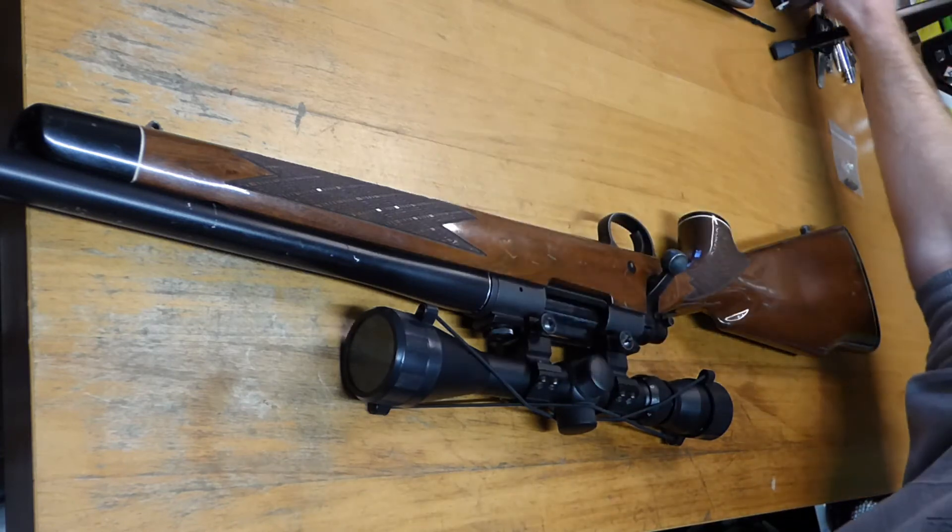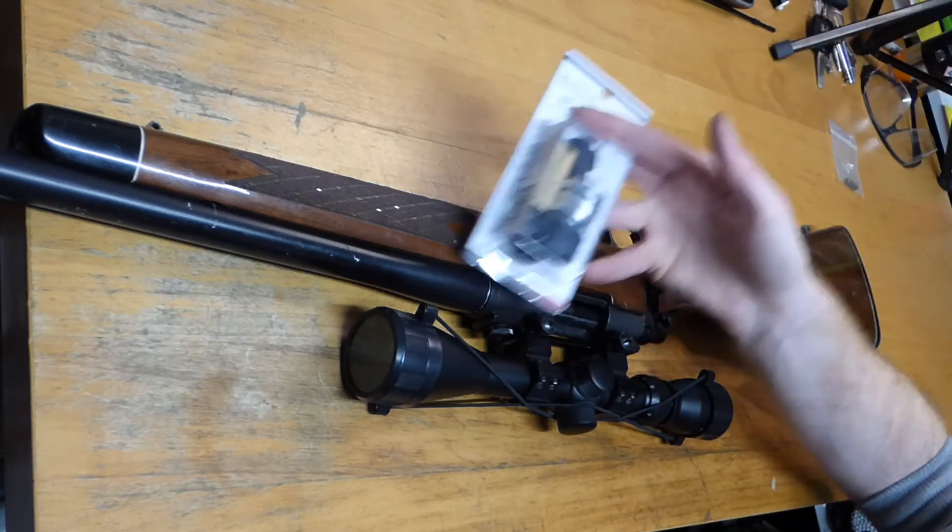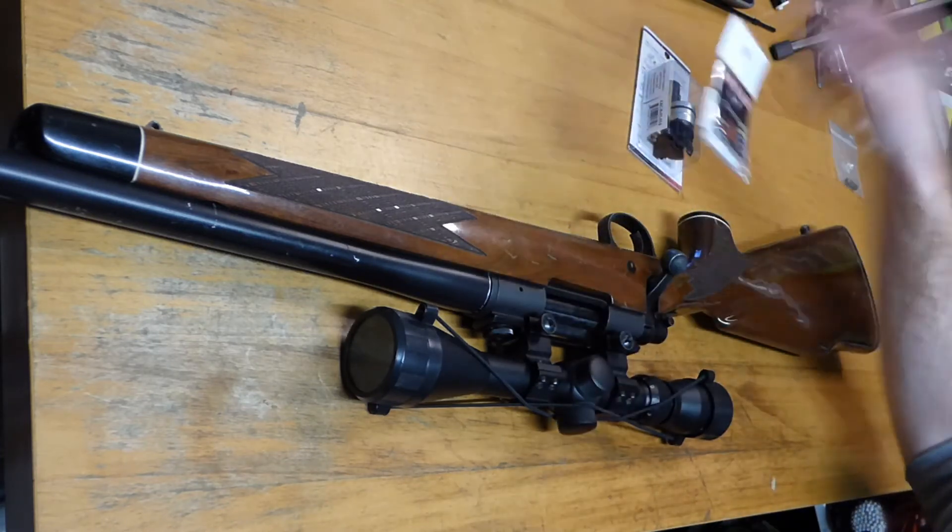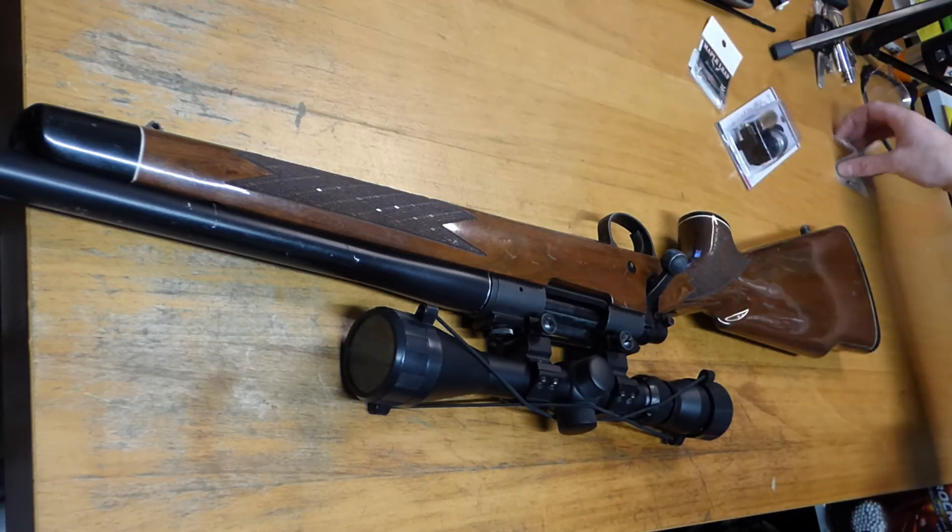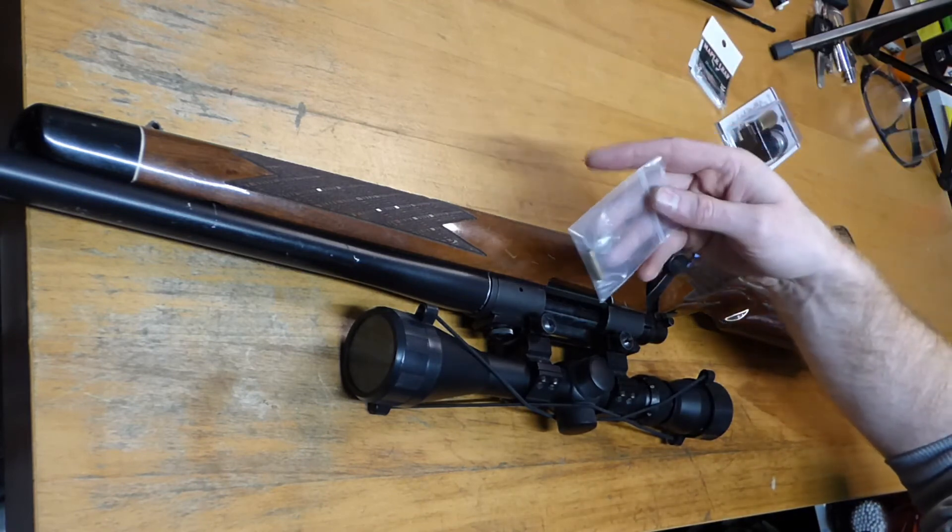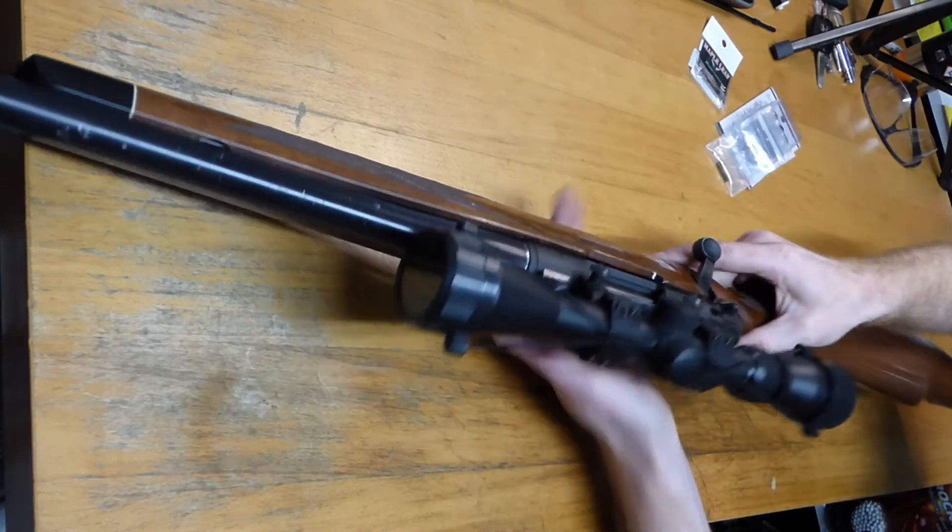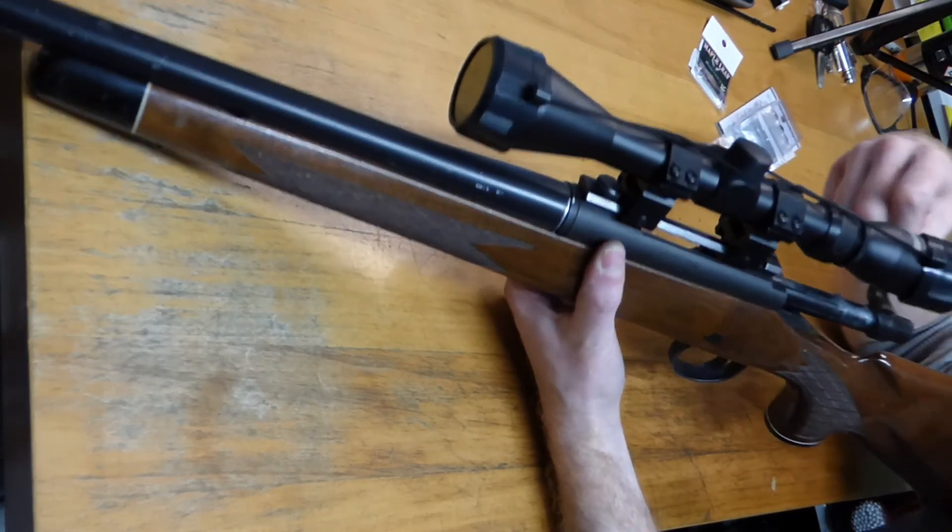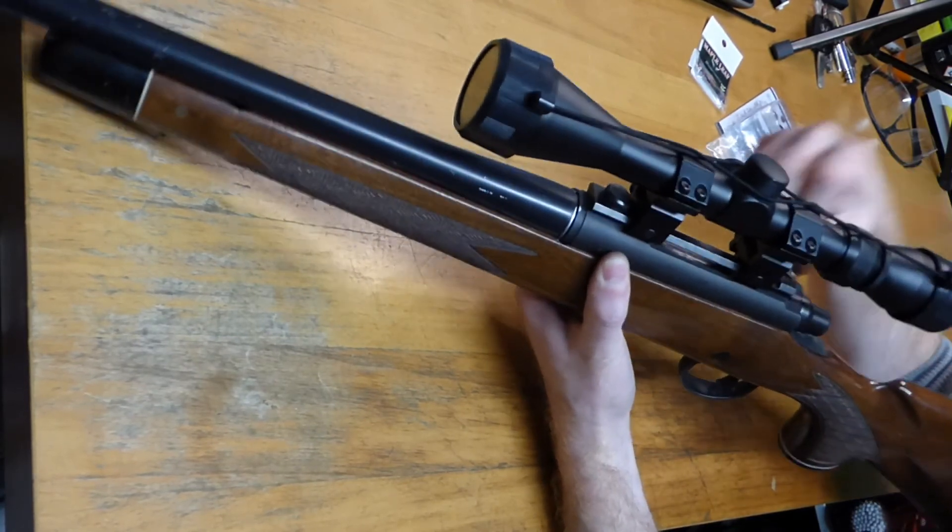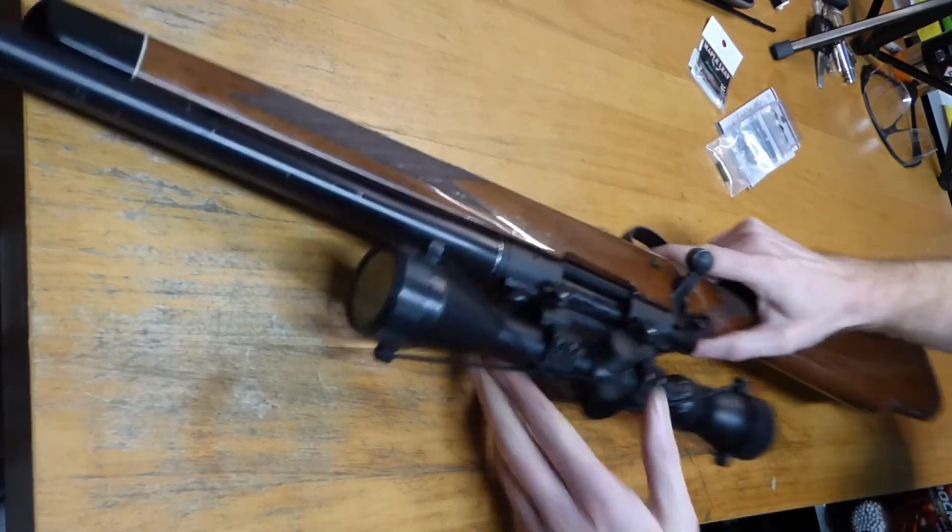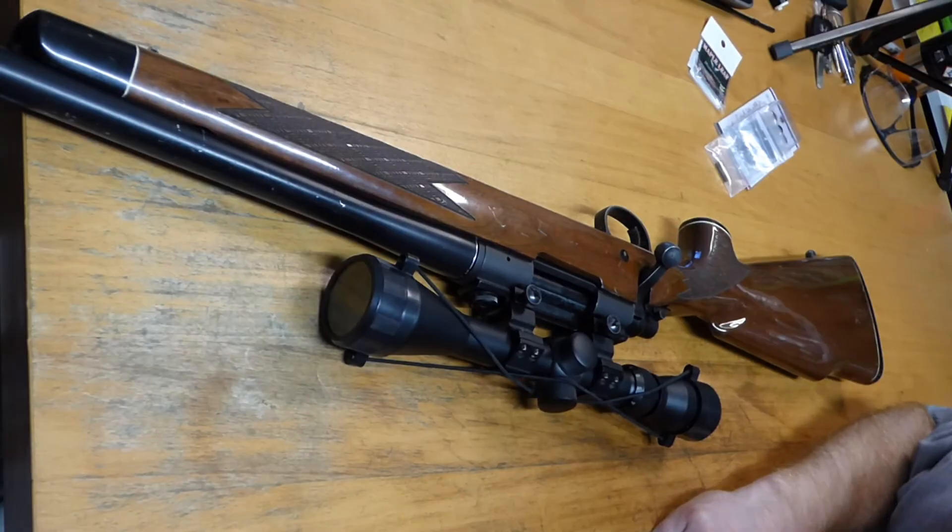That's all back together now. Obviously new hop up in, that's got a Maple Leaf Decepticon in there which is absolutely ideal with the bucking, everything that it comes with. Obviously new longer nozzle to make it work with the new hop up. All back together, cleaned up, re-greased, shooting well. That's another one done.